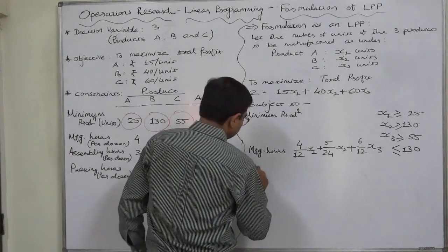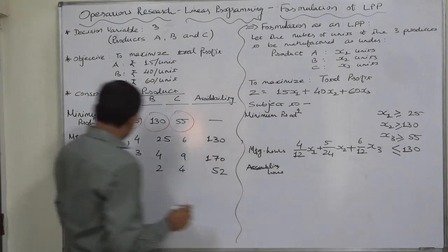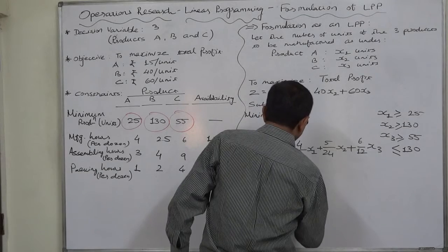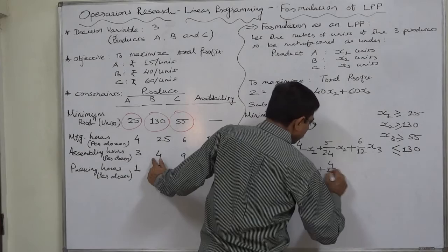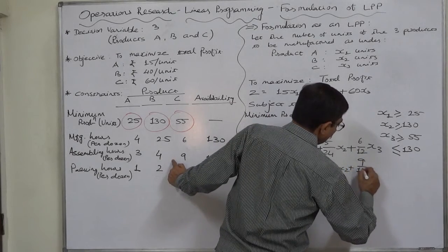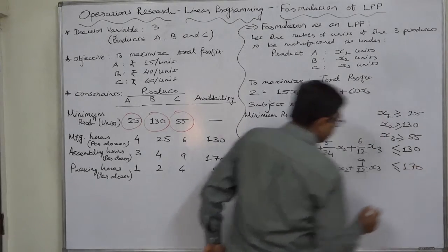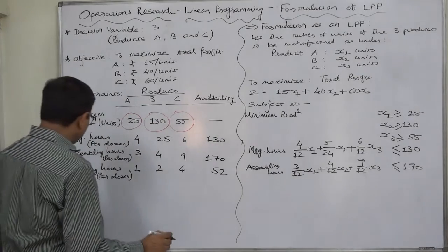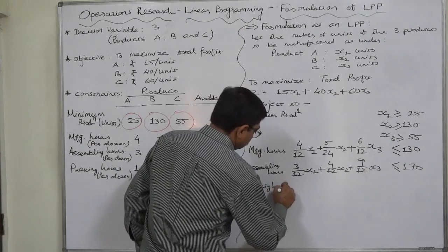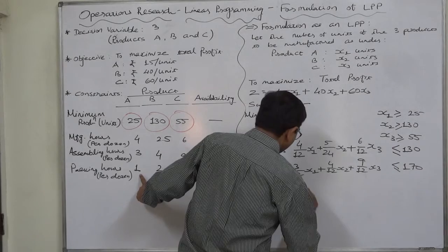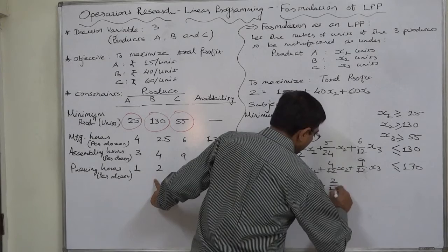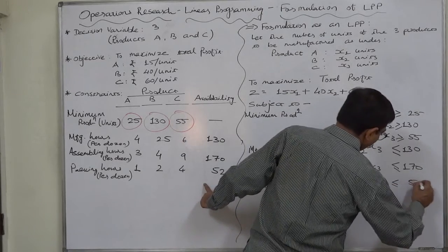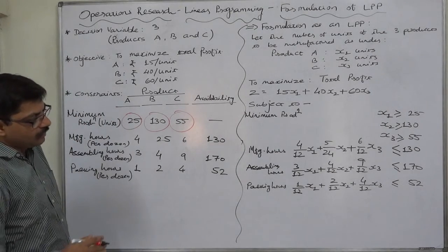For assembling hours, again per dozen: (3/12)·X1 + (4/12)·X2 + (9/12)·X3 ≤ 170, since 170 hours are available and we cannot use more than that. For packing hours: (1/12)·X1 + (2/12)·X2 + (4/12)·X3 ≤ 52, because only 52 hours are available for packing. Either we use all 52 hours or less than that.